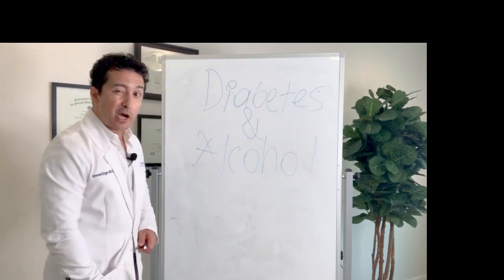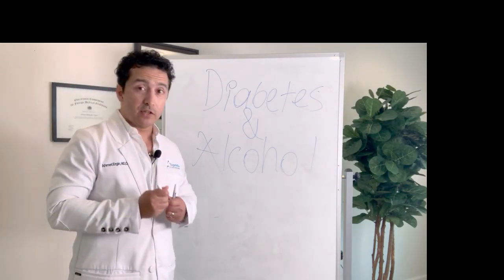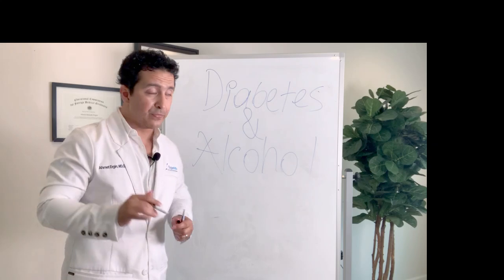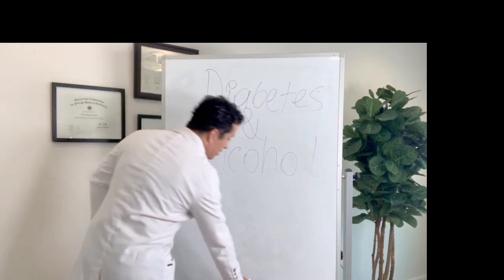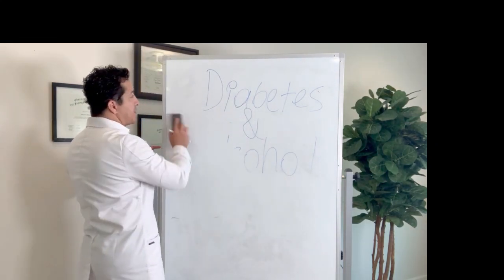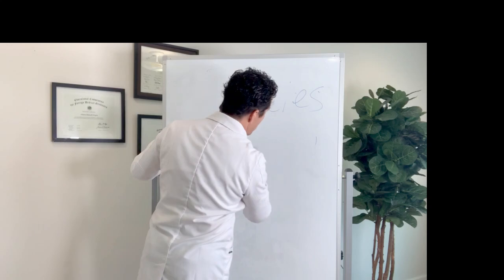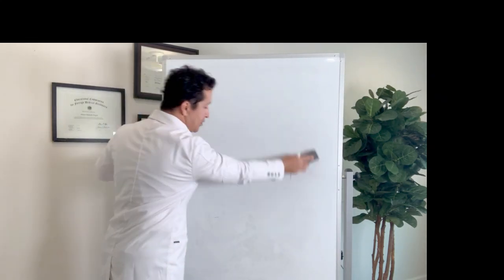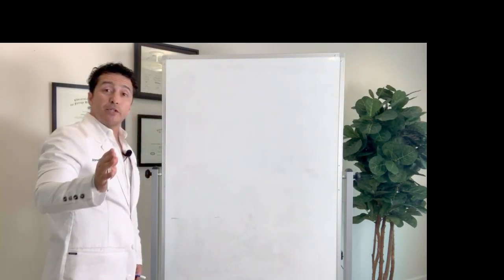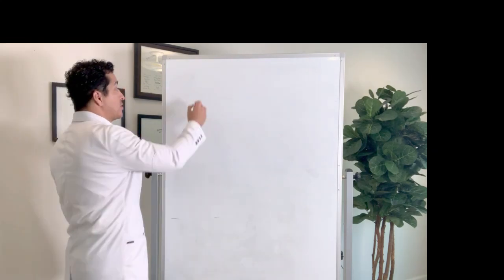I'll tell you a couple quick guidelines guys and if you listen to this, you will never get into trouble. Now, if you want to drink alcohol, this is how you do it. You have diabetes and you want to have a couple drinks with your friends, just limit it to two drinks total.